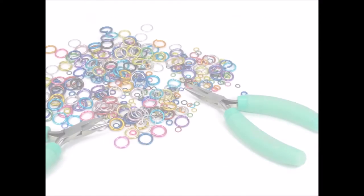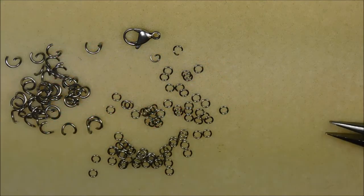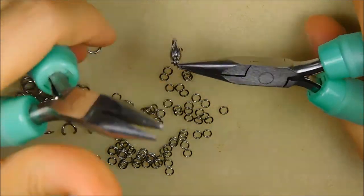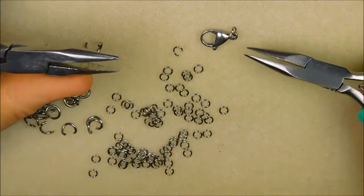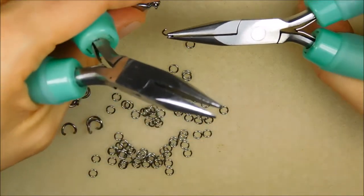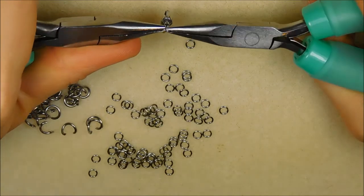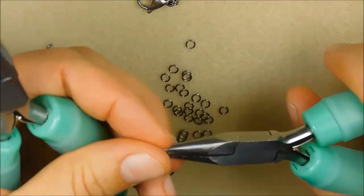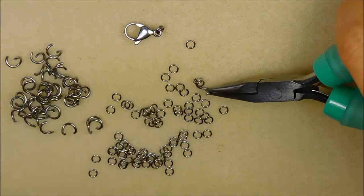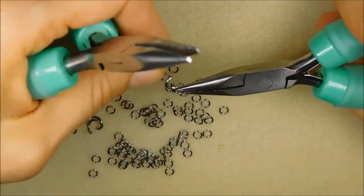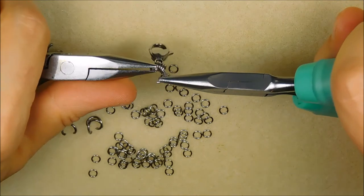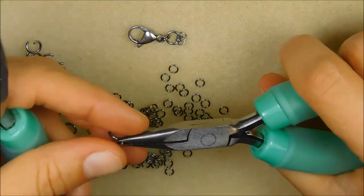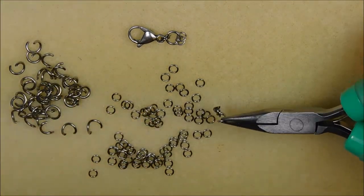So let's start speed weaving the anklet. Connect a four millimeter ring to the lobster clasp and close. Run another four millimeter ring through exactly the same path and close. Pick up two four millimeter rings with an open six millimeter ring. Before closing, run the open ring through the two most recently added rings and close. Repeat these steps until your chain is 11 and a half inches long. This will be a one-two-one chain with 84 segments.